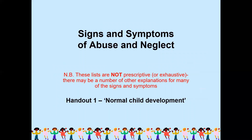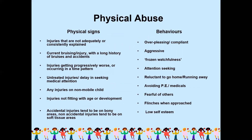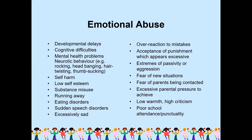Signs and symptoms of abuse and neglect — this list is not exhaustive. There may be a number of other explanations for many of the signs and symptoms within normal child development. Physical abuse signs include: injuries that are not adequately or consistently explained; a long history of bruises and accidents; injuries getting progressively worse or occurring in a time pattern; attention seeking; untreated injuries; delay in seeking medical attention; reluctance to go home or running away; any injuries on a non-mobile child; avoiding medical checks; fearful of others; injuries not fitting with age or development. Emotional abuse signs include: developmental delays, overreaction to mistakes, cognitive difficulties, acceptance of punishment, mental health problems, extremes of behavior, aggression, self-harm, and fear of new situations.